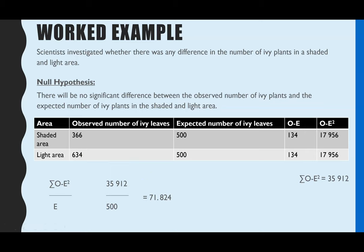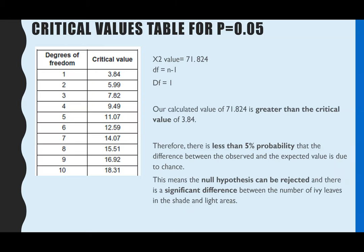The final step is to work out what that chi-squared value actually tells us, and this is where you have to compare your calculated value to a critical value. I've just got the column here for p equals 0.05, and what that means is all of these critical values are for a p-value which is the probability that there will be 5% probability that the result, in this case the difference, is due to chance.